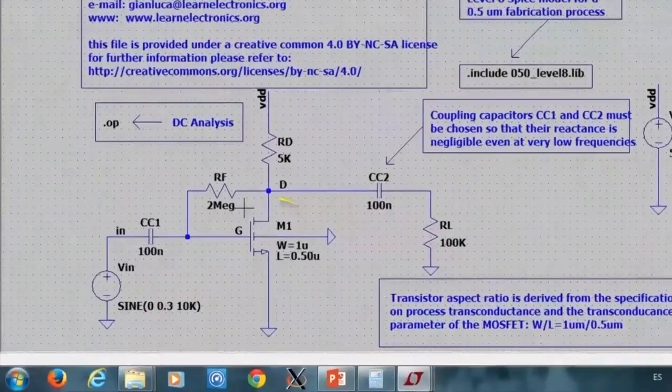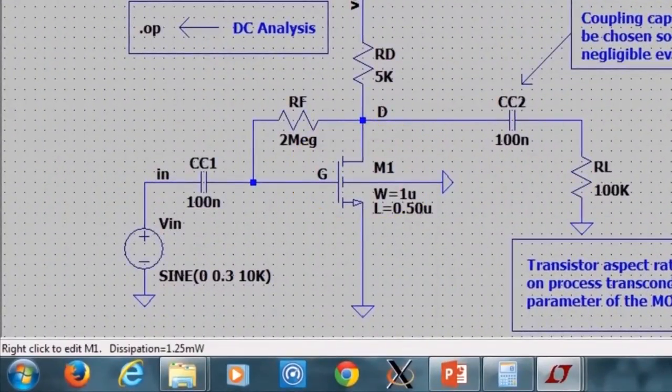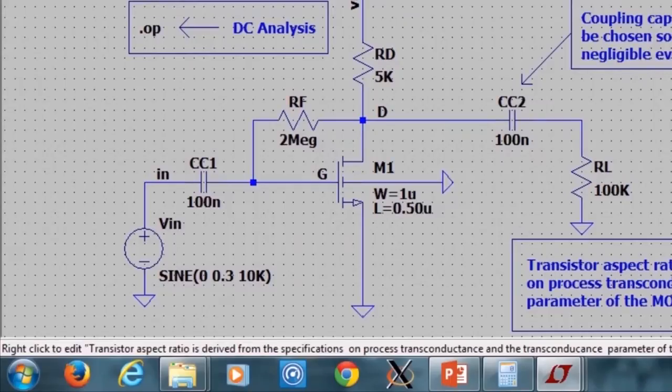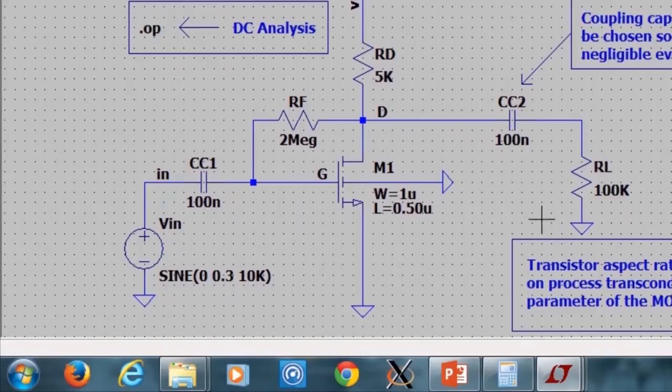Observe that I can deduce the size of my transistor M1 from the specification on process transconductance and on the transconductance parameters. This leads to a MOS transistor with channel width 1 micron and channel length equal to 0.5 micron.